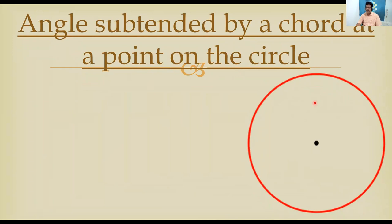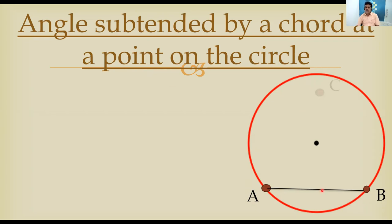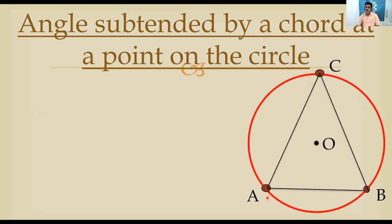Here is a circle. Take two points and join them — AB is a chord. The chord is making an angle at a point on the circle. Take a point C on the circle. Join AC and BC. O is the center. AB is the chord, and from the endpoints of the chord we are joining point C which lies on the circle. This gives us the angle ACB — the angle subtended by chord AB at a point on the circle.